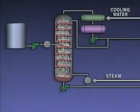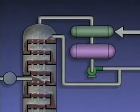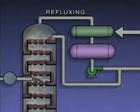If a distillation tower worked perfectly, it would produce pure products. Unfortunately, that's not the case. The lighter products usually contain some heavier fractions, and the heavier products usually contain some lighter fractions. This is sometimes referred to as overlap. Distillation systems use several methods to help maximize the purity of the products. One of these methods is called refluxing.